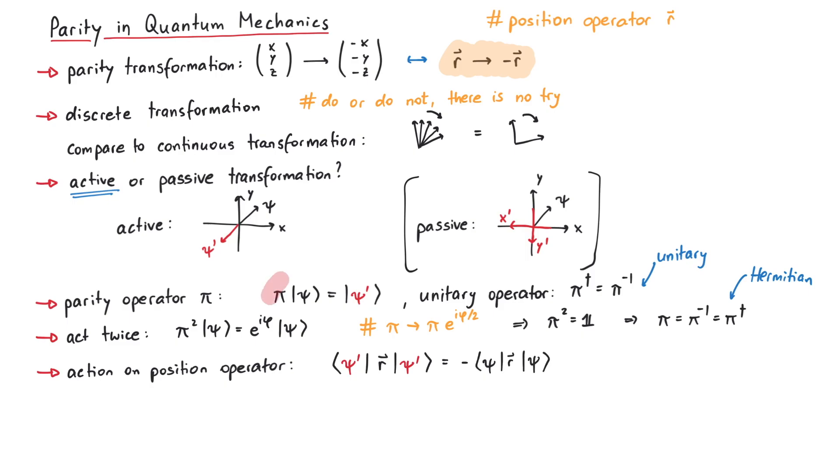Since psi prime is equal to pi psi, we can write this equation like this, which must be true for any wavefunction psi. So the important thing is that this operator equation, pi dagger r pi is equal to minus r, is true.